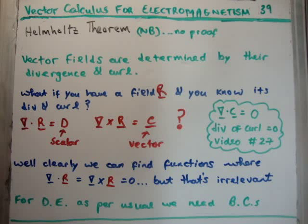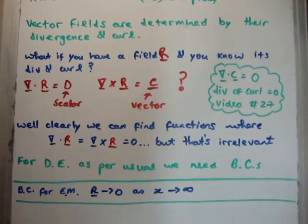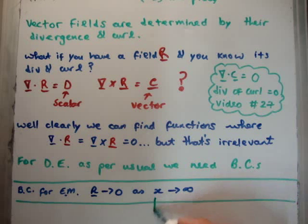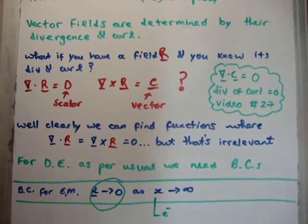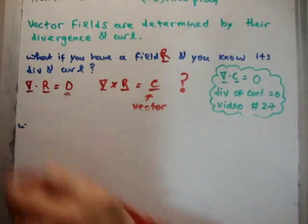We need to set boundary conditions, and I'll tell you the boundary conditions for electromagnetism before we've begun studying it. The boundary conditions are that the fields go to zero as you go far away from the sources. For example, the source of the electric field is electric charge; if you go far away from the electron, the field goes to zero. It is in that realm that the Helmholtz theorem holds true, and we apply it to both the electric and magnetic fields.